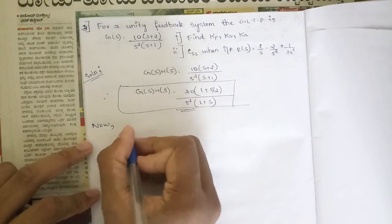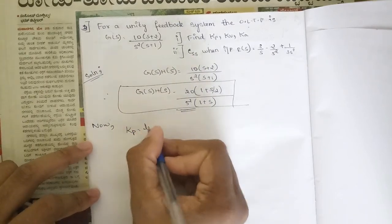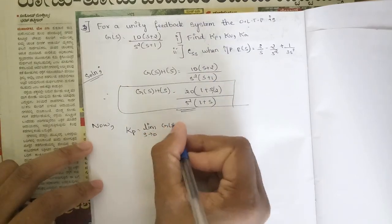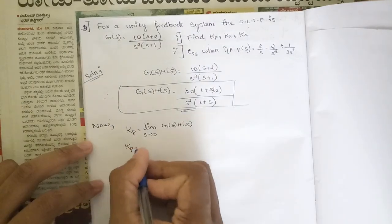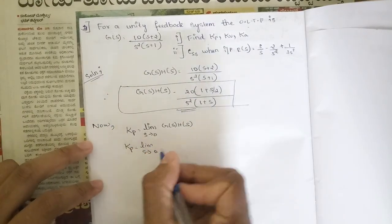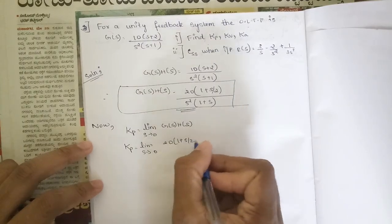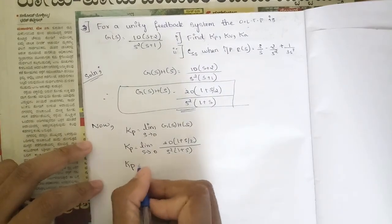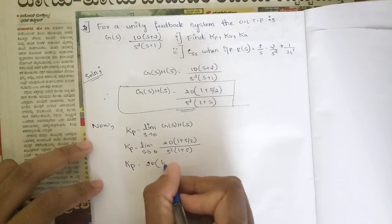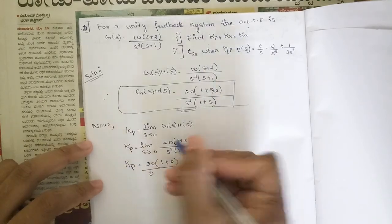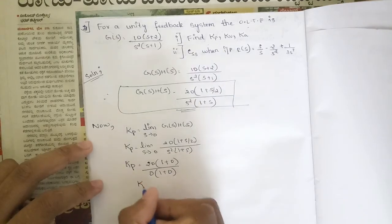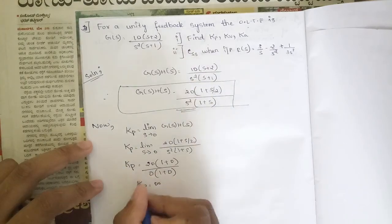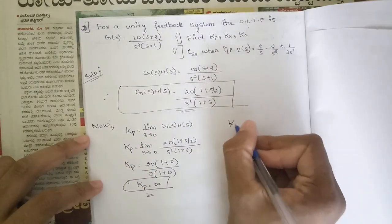Finding Kp: the formula is Kp = lim(s→0) G(s)H(s). So Kp = lim(s→0) 20·(1 + s/2) / [s²·(1 + s)]. Applying the limit, the numerator becomes 20·(1+0) = 20 and the denominator is 0, so 20/0 = infinity. Therefore Kp = ∞.